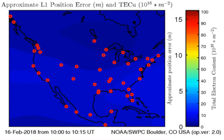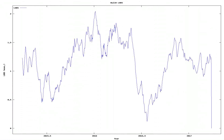And here we see the total electron content above the Earth. Anomalies in total electron content have sometimes preceded earthquakes below that area on Earth.